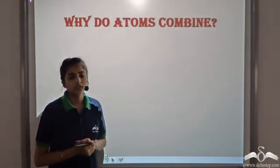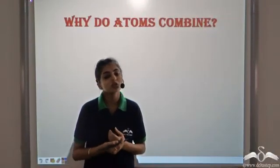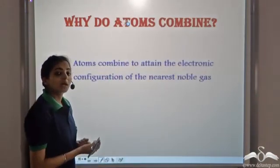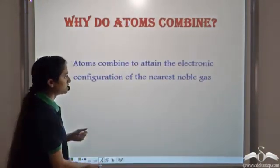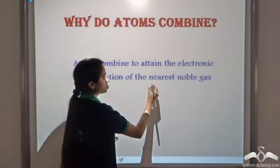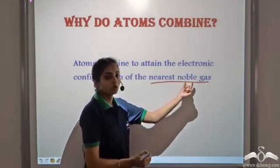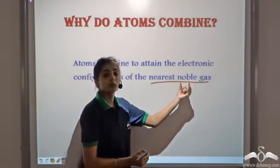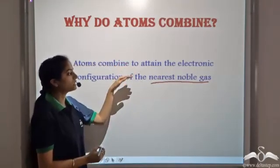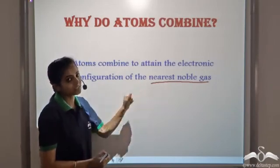Why do atoms combine? We know that in life, everyone tries to attain stability. So is the case with atoms — they combine to attain stability. That is, they combine to attain the electronic configuration of the nearest noble gas. Noble gases are very stable because they have a complete octet. So when atoms combine, they try to attain the electronic configuration of the nearest noble gas and hence they attain stability.